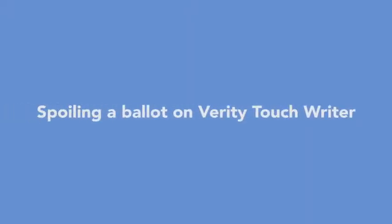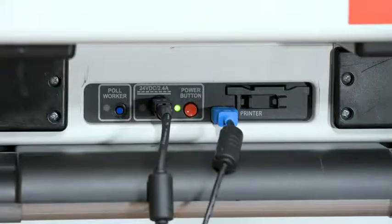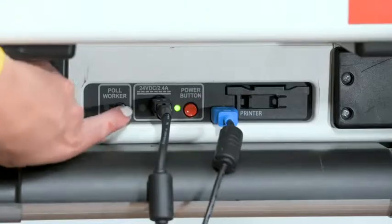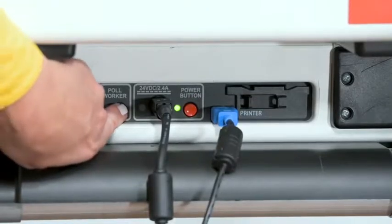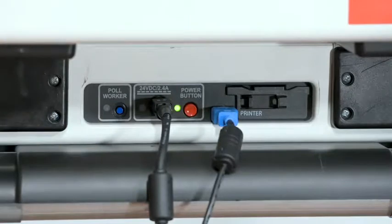Spoiling a ballot on Verity TouchRider. To spoil an active ballot on the TouchRider before it has been printed, press the blue poll worker button on the back of the Verity TouchRider.